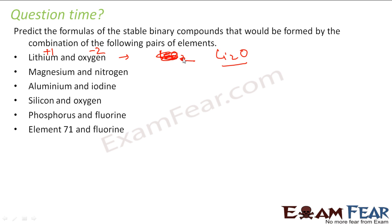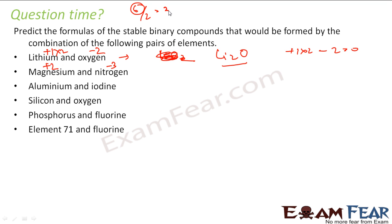For Li₂O: plus 1 times 2 plus minus 2 equals 0, correct. For magnesium and nitrogen: nitrogen has minus 3 oxidation state, magnesium has plus 2. The LCM of 3 and 2 is 6. So magnesium must be 6 divided by 2 equals 3 atoms, and nitrogen must be 6 divided by 3 equals 2 atoms. The formula is Mg₃N₂.